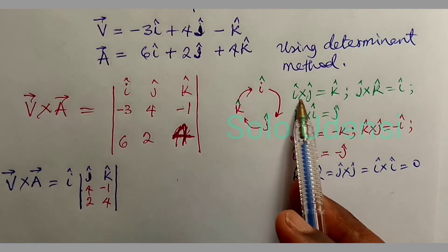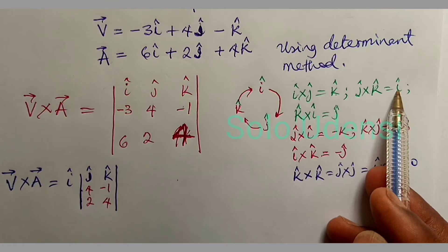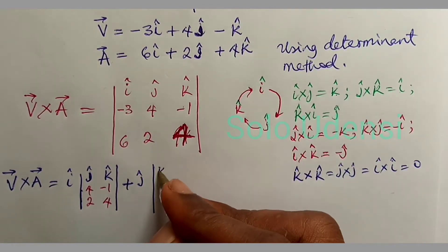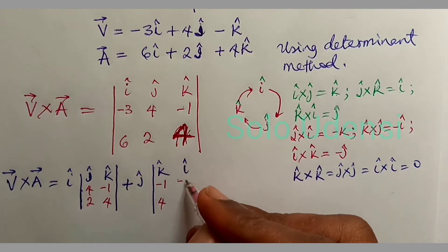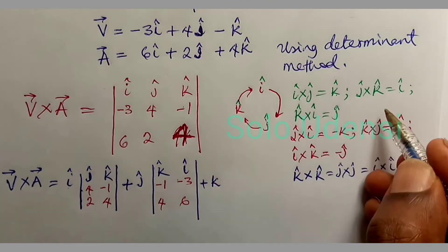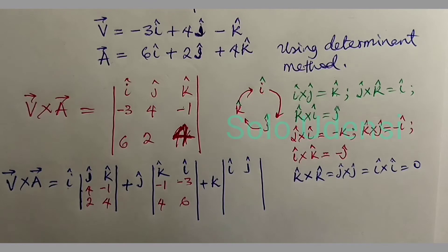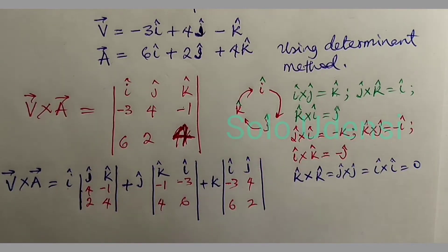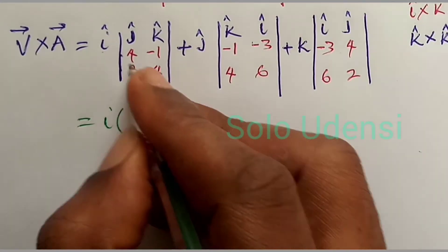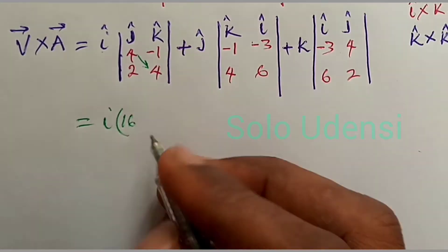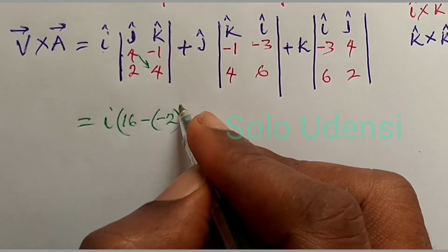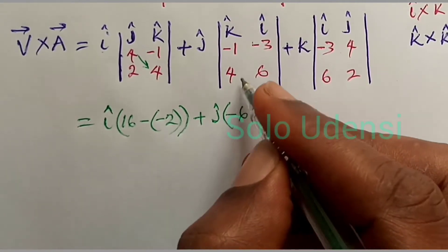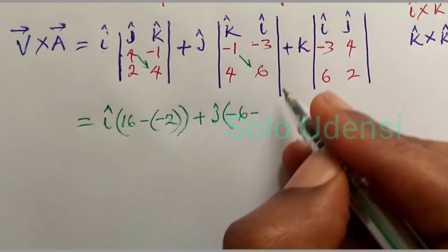For the positive J component, we will have K cross I, using entries −1, 4 and −3, 6. For the positive K component, we use I, J with entries 3, 4 and 6, 2. We now multiply: I into (16 − (−2)), minus J into (−6 − (−2)), giving us the I and J terms.